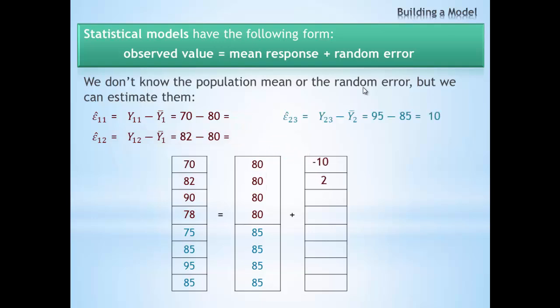The third residual from the second group is y_23, in this case 95, the third observation from the second group, minus the mean of the second group, and gives us a value of 10.